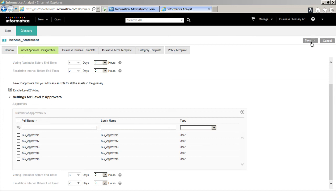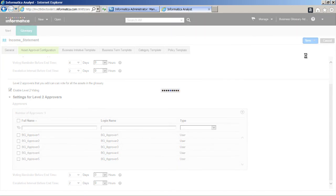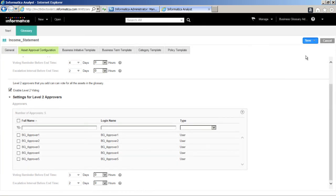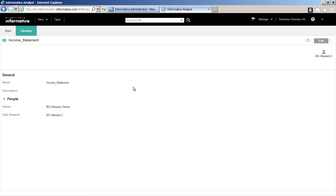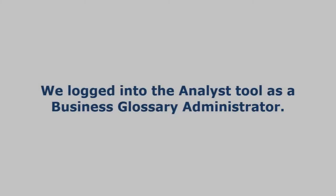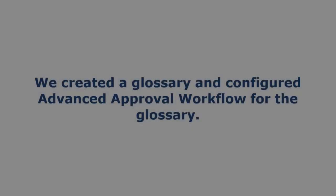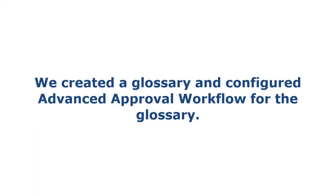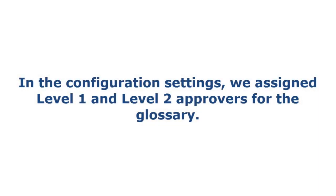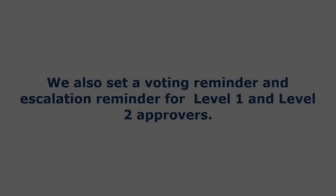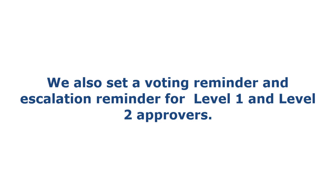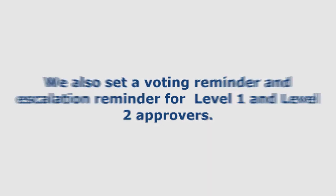We will now click Save and Finish to complete the task. The Analyst Tool updates the Advanced Approval Workflow configuration settings. That completes this demo. To summarize, we logged into the Analyst Tool as a Business Glossary Administrator. We created a Glossary and configured Advanced Approval Workflow for the Glossary. In the configuration settings, we assigned Level 1 and Level 2 Approvers for the Glossary, and set a Voting Reminder and Escalation Reminder for both levels.